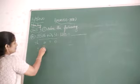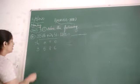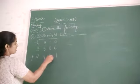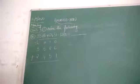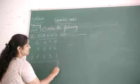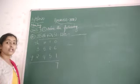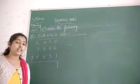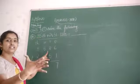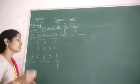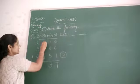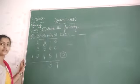That is 3586 plus 2451. Now I need to add. Six plus one is seven. Eight plus five — so eight plus five, how much are you going to get? Eight, nine, ten, eleven, twelve, thirteen. So we get thirteen. Three goes down and one is carried to the next column.